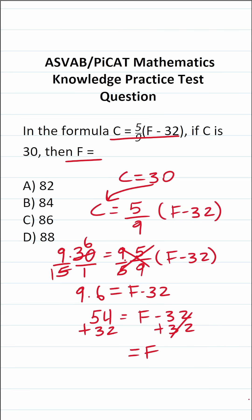All right, so all we have to do is add 54 and 32 to get our answer. 4 plus 2 is 6, 5 plus 3 is 8. So we can see that F is going to be 86. So the answer to this one is C, 86.